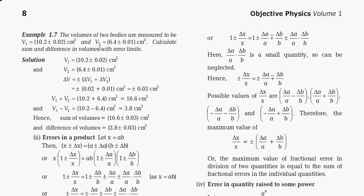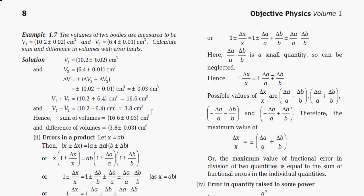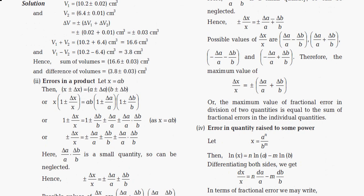Let's apply this with an example. The volumes of two bodies are measured as V1 = 10.2 ± 0.02 cm³ and V2 = 6.4 ± 0.01 cm³. The error in both sum and difference is: ΔV = 0.02 + 0.01 = ±0.03 cm³. So the sum V1 + V2 = 16.6 ± 0.03 cm³, and the difference V1 − V2 = 3.8 ± 0.03 cm³.